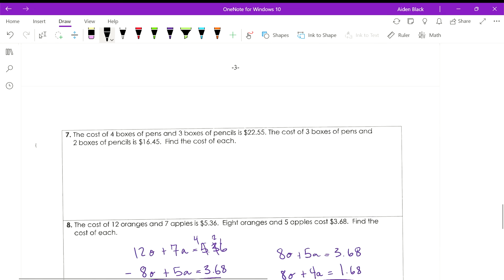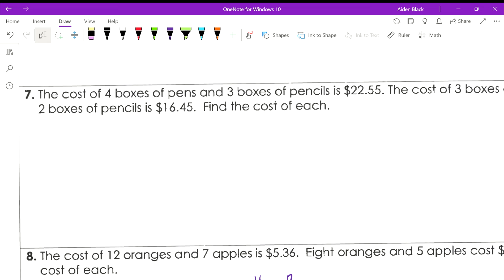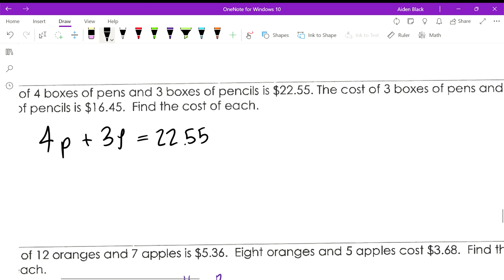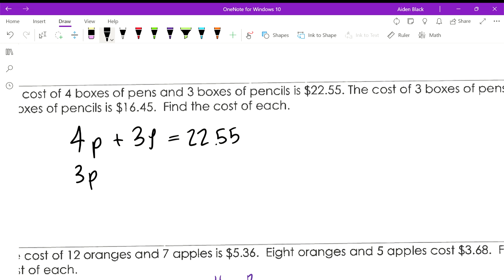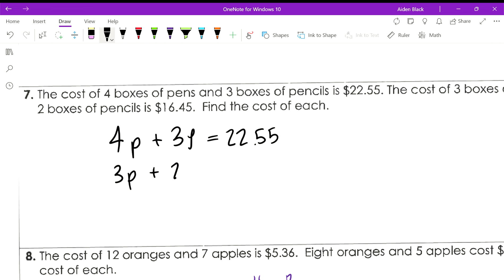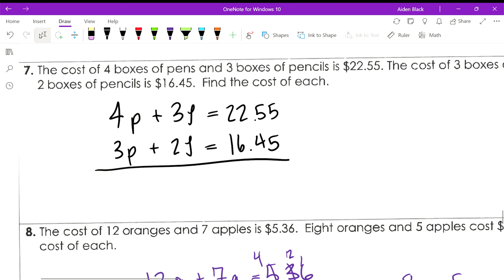Alright, let's see if we can get one of these questions done. The cost of 4 boxes of pens and 3 boxes of pencils is $22.55. So I'll write, I'll use P for pens, but then I'll use L for pencils, like lápiz, like pencils in Spanish, and plumas, pens in Spanish. So this accurately describes that first scenario. Second scenario is 3 boxes of pens and 2 boxes of pencils is $16.45.